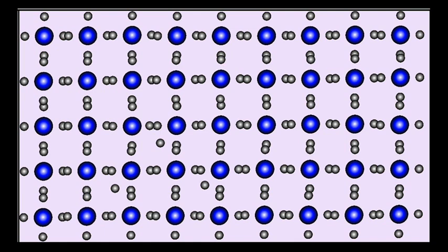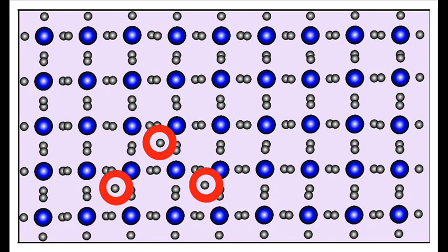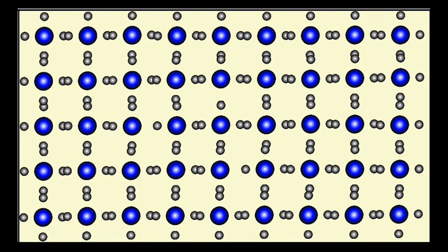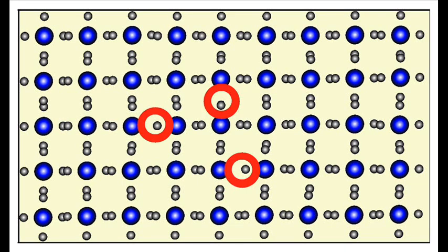In an N-type semiconductor, the majority carriers are negative charge carriers or electrons. In a P-type semiconductor, majority carriers are holes or positive charges.